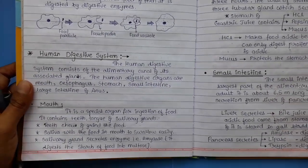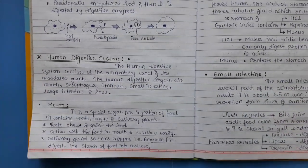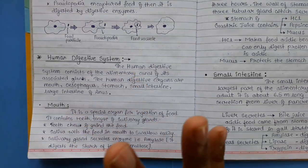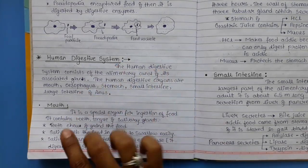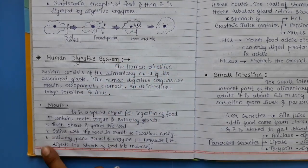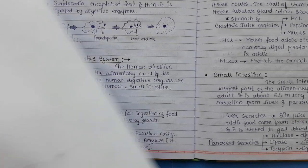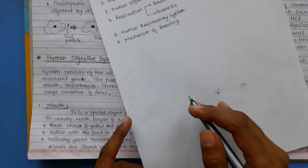Now, the human digestive system — a very important topic. You can remember all the organs using a shortcut mnemonic. The mnemonic is MOSSLA: Mouth, Oesophagus, Stomach, Small intestine, Large intestine, Anus. You need to write about these six organs.